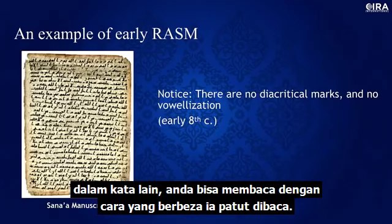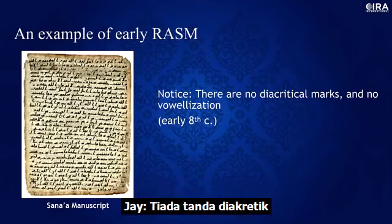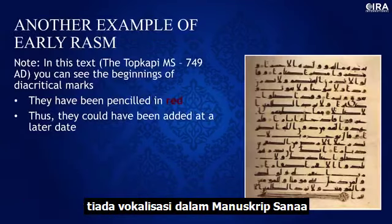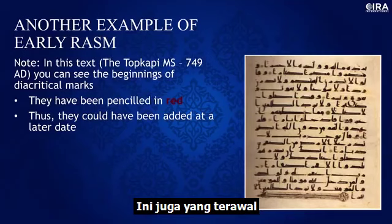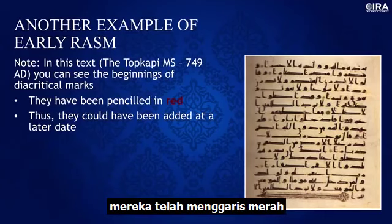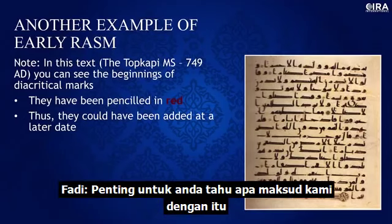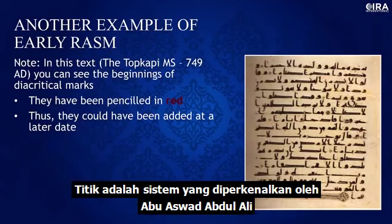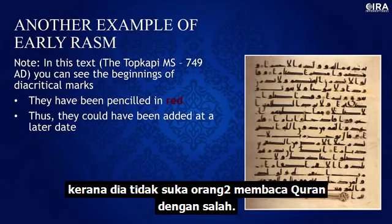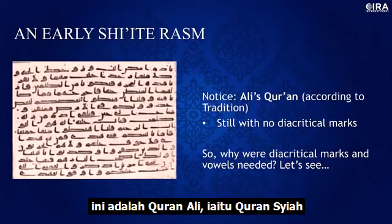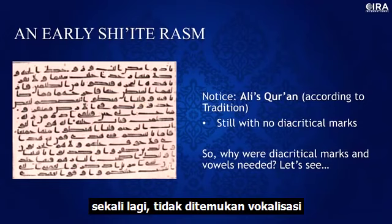Without those markings, you're not going to be reading exactly the way it was intended. There are no diacritical marks and no vowelization in the Samarkand manuscript. The Topkapi manuscript has penciled-in red notes — a beginning of diacritical marks added later. This system was invented by Abu Aswad al-Duali because he was troubled by the fact that people were not reading the Quran accurately. Ali's Quran — a Shiite manuscript — also has no dots, no vowels, no damas, no kasras, no fatah.